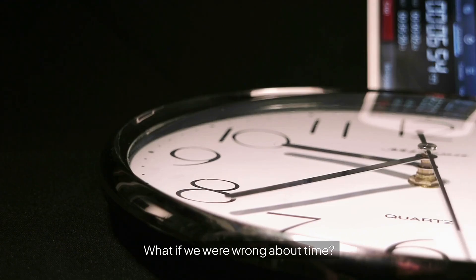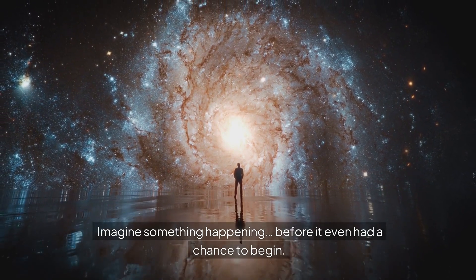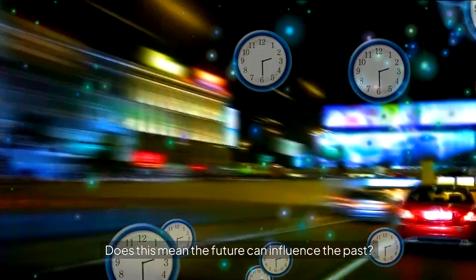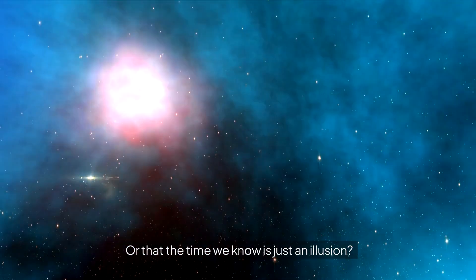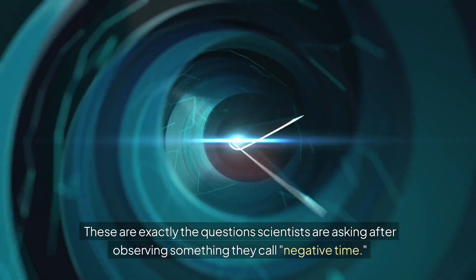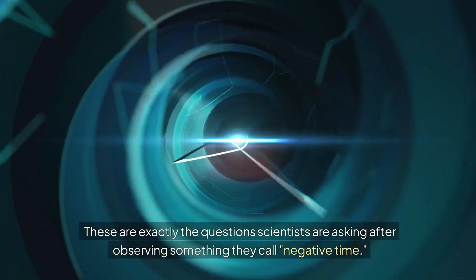What if we were wrong about time? Imagine something happening before it even had a chance to begin. Does this mean the future can influence the past? Or that the time we know is just an illusion? These are exactly the questions scientists are asking after observing something they call negative time.